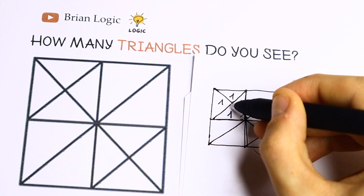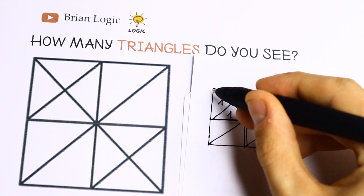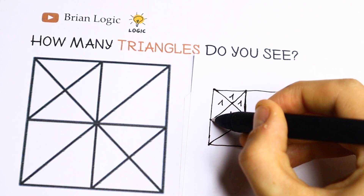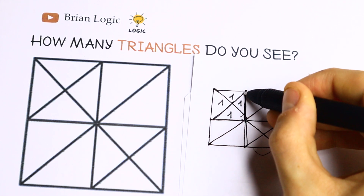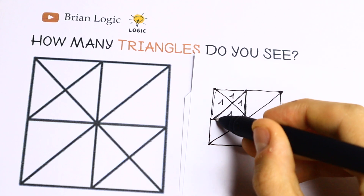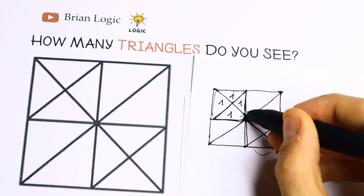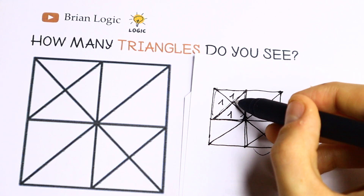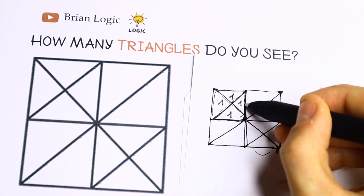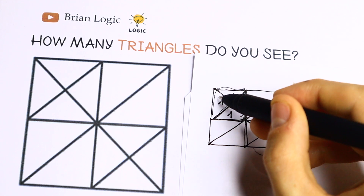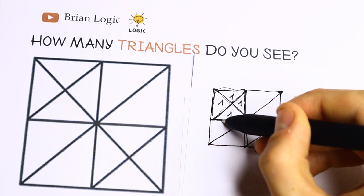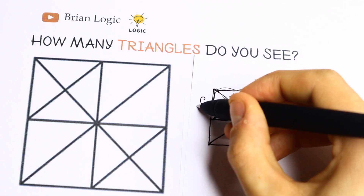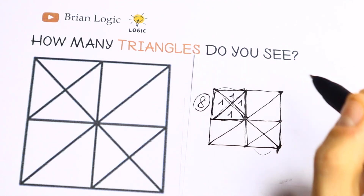So we have 1, 2, 3, 4 triangles in that section. If we add these two parts we will have 5, if we add these two parts we will have 6, and if we add these two parts from this perspective we will have 7, and we will have 8 in the bottom. So this figure gives us 8 triangles.